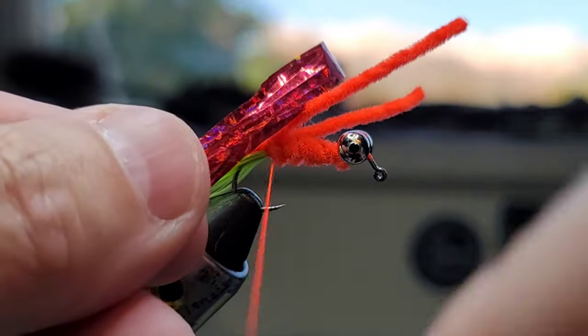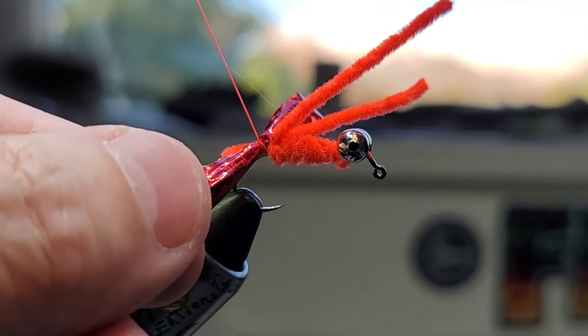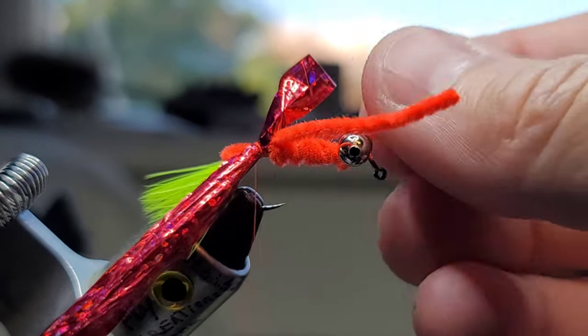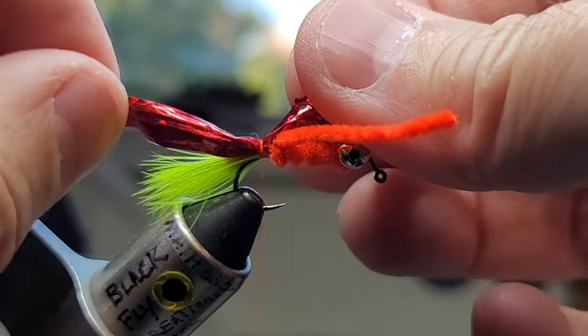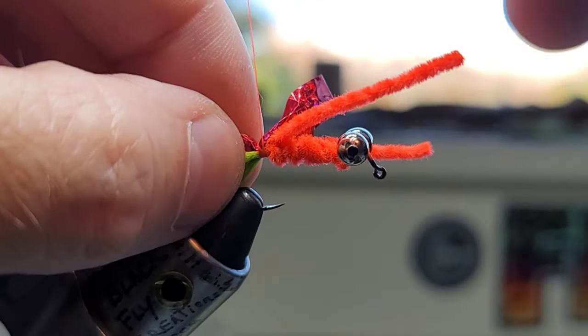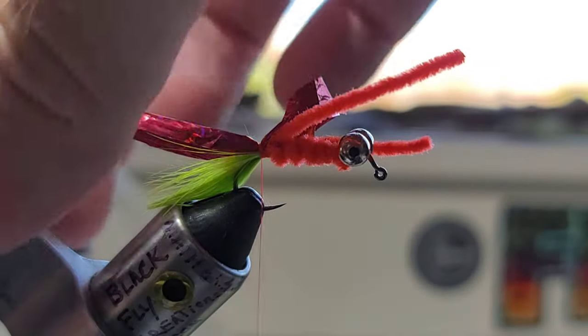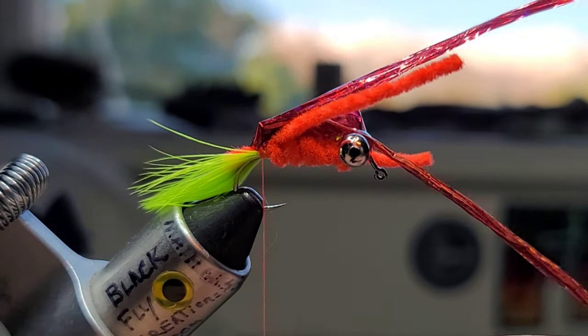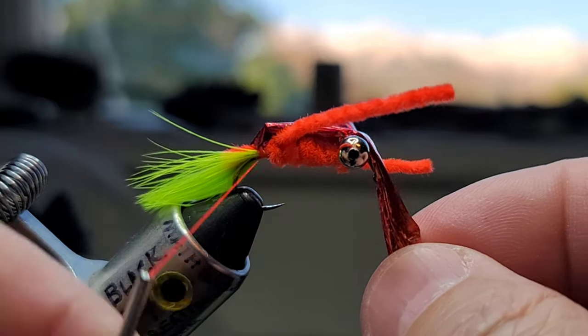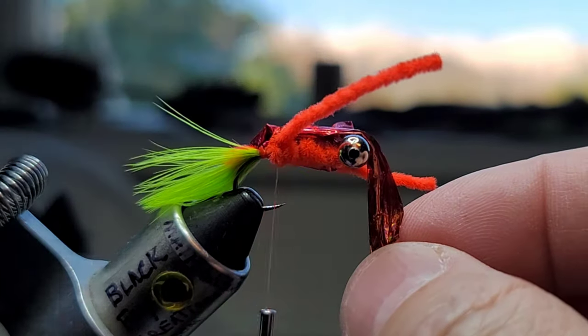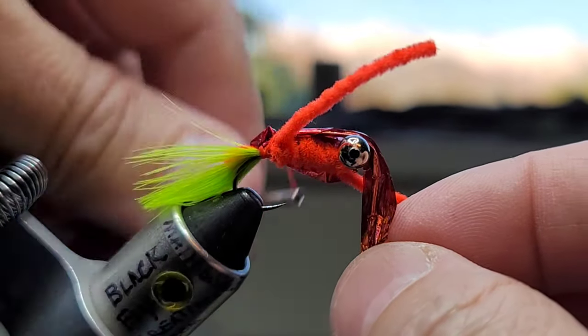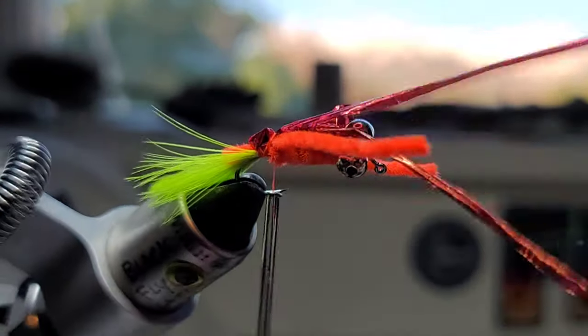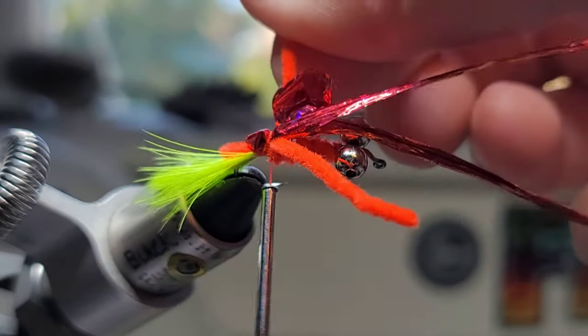Now we're going to grab some flashy red Christmas ribbon, just fold that in half like that. I'm going to tie that right there. It's important these stay separated for this next step. Get that wrapped in good and tight. Now we're just going to take the ribbon and fold it forward like this.